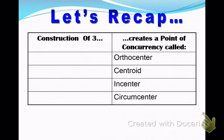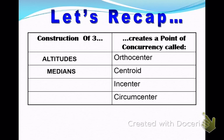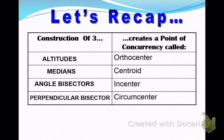Let's recap. There are four sets of segments we construct in a triangle, each creating a point of concurrency with its own name. Three altitudes give us the orthocenter. Three medians meet at a centroid. Three angle bisectors create an incenter. Three perpendicular bisectors meet at the circumcenter. You need to keep those straight, as knowing which point is created by which segments intersecting will also help you construct them.